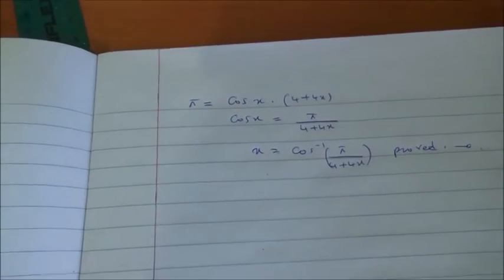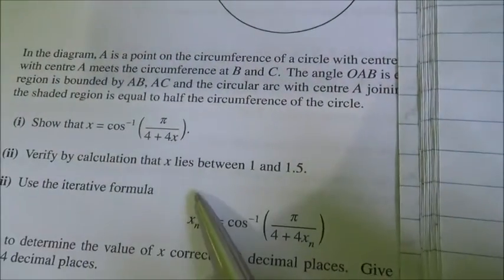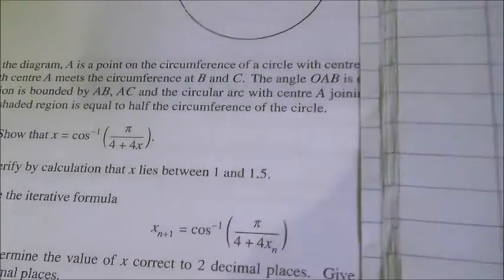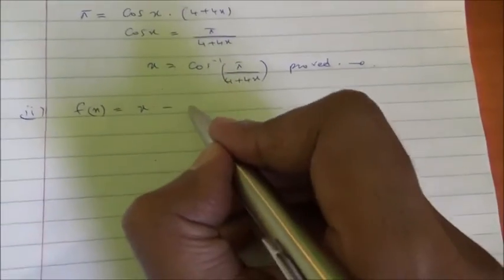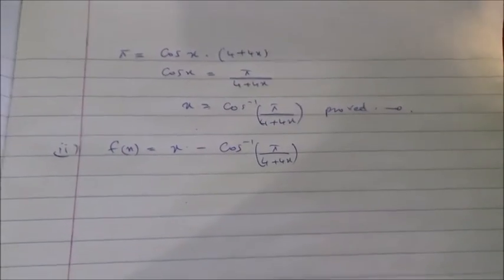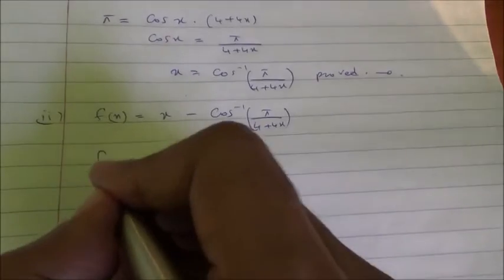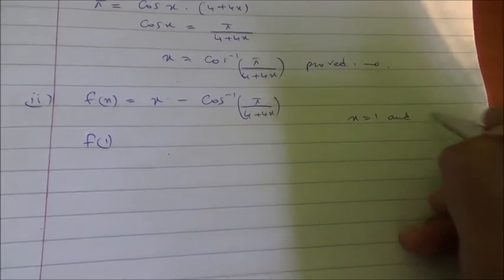For the second part, we need to verify by calculation that X lies between 1 and 1.5. To do this, I define F(X) equals X minus the inverse cosine of π divided by (4 + 4X). We need to show there is a root between X equals 1 and X equals 1.5.